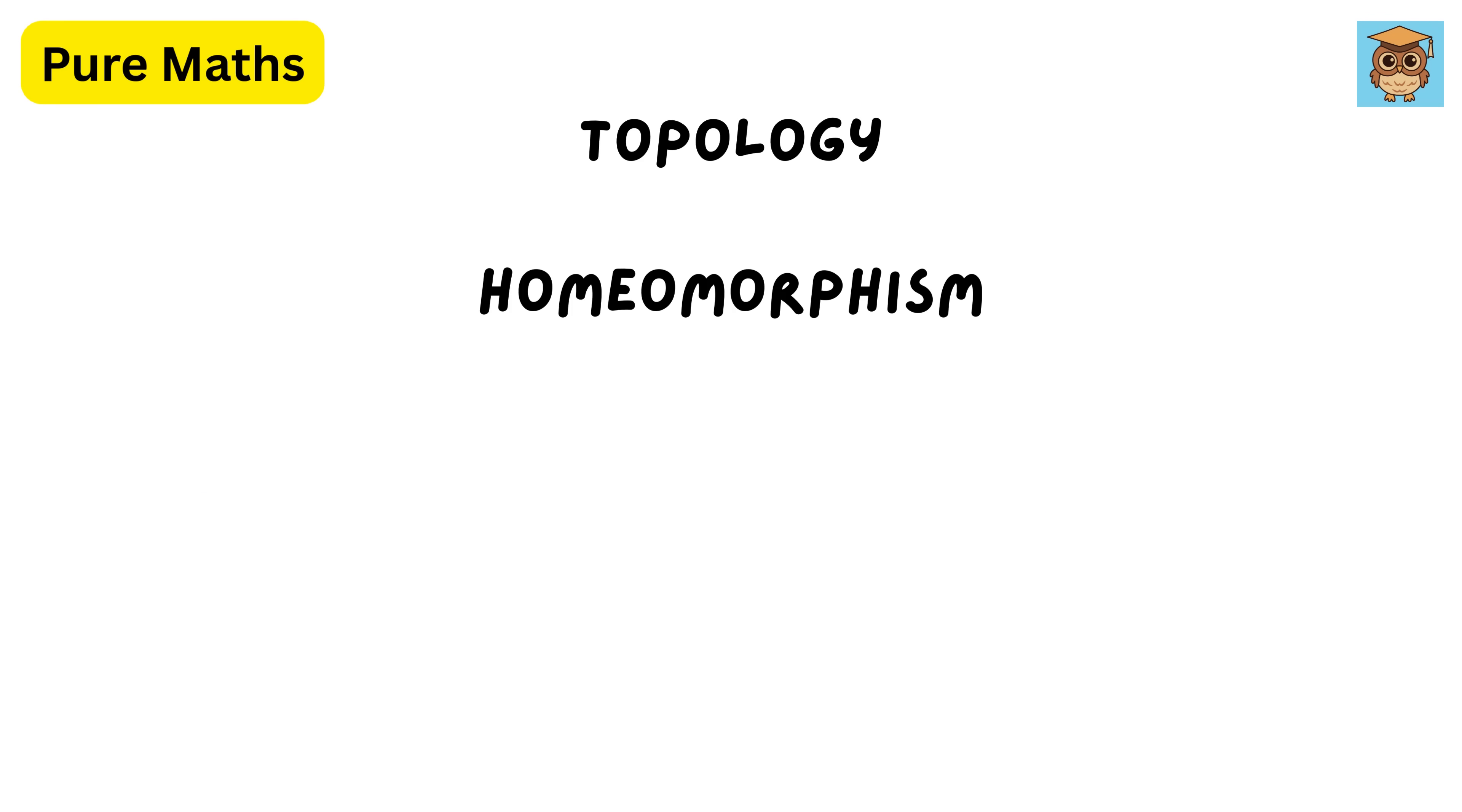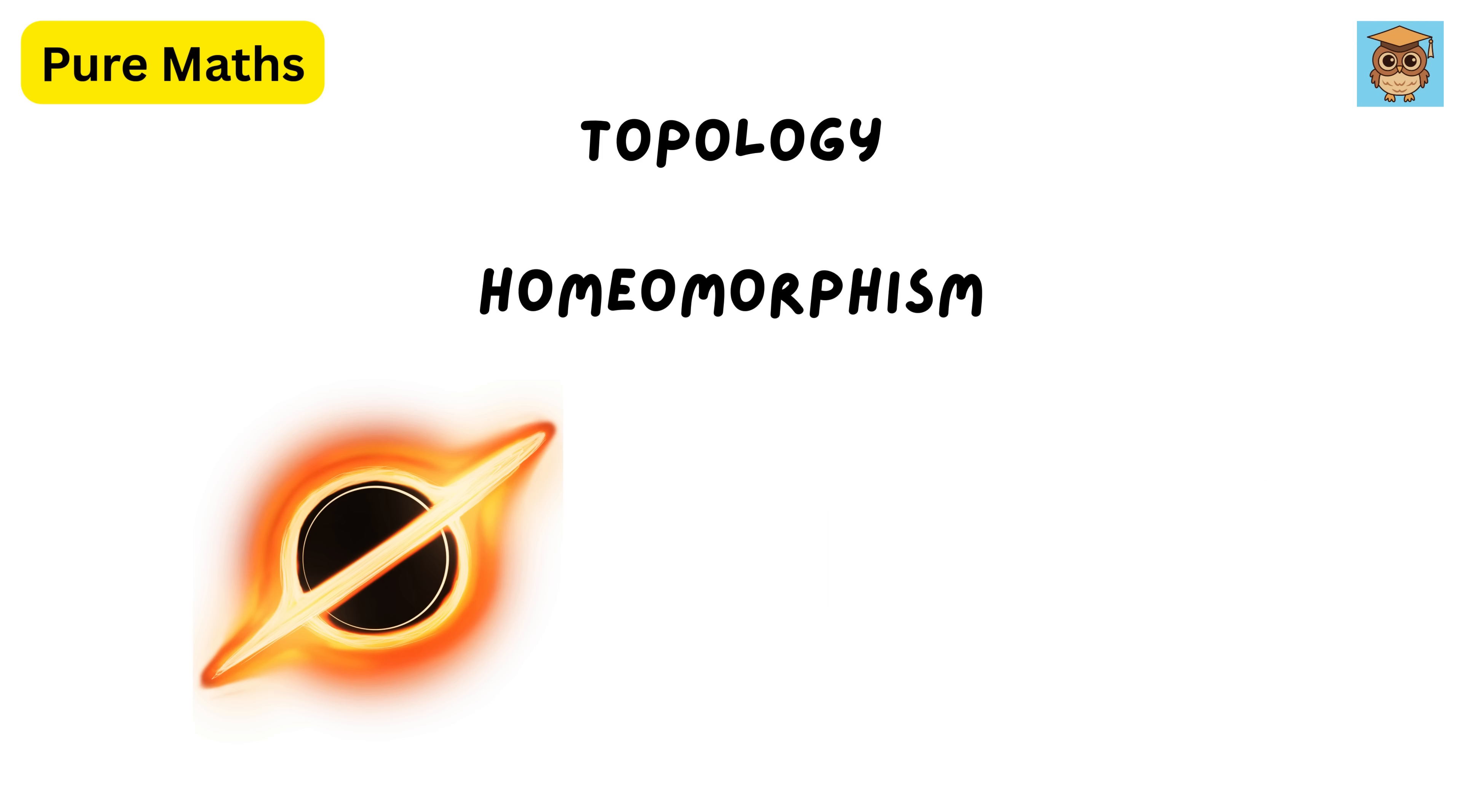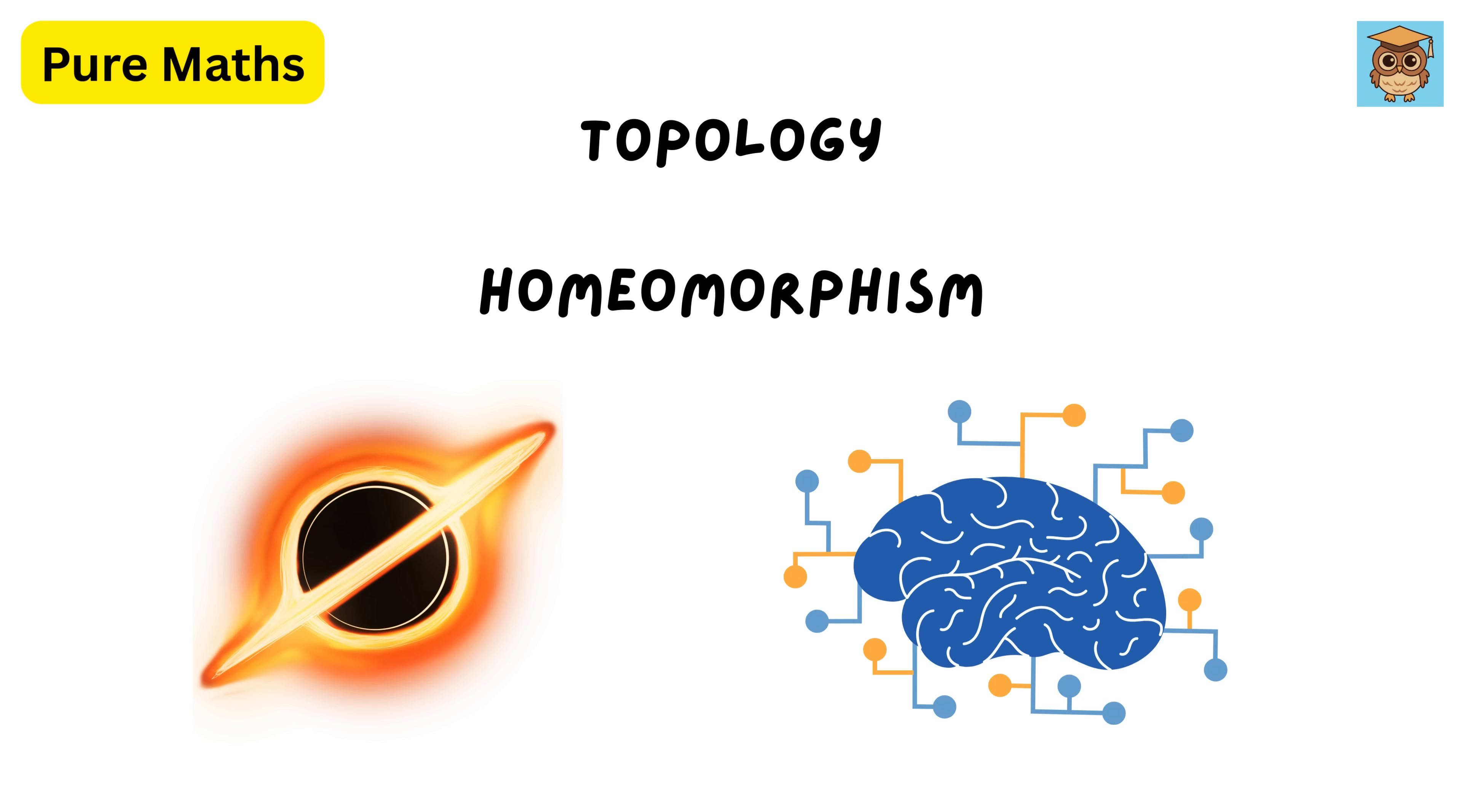And then homeomorphism. If one shape can morph into another without cutting or gluing, like a square into a circle, they're topologically the same. It's used in advanced physics, and even explains how your brain forms connections.